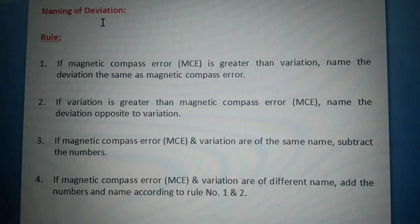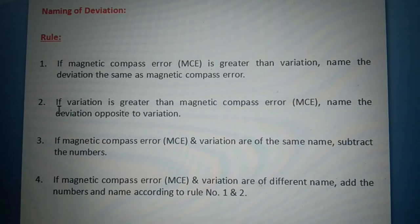Now let's go to naming of deviation. Rules. Number one: if magnetic compass error is greater than variation, name the deviation the same as magnetic compass error. Number two: if variation is greater than magnetic compass error, name the deviation opposite to variation.